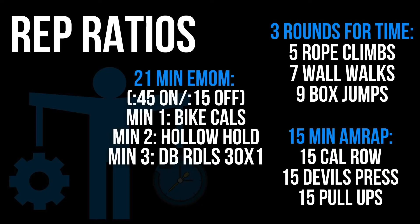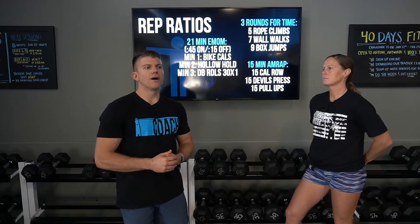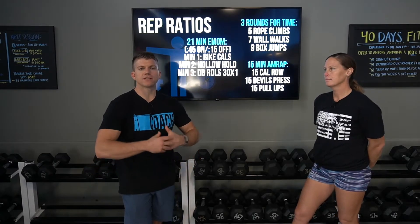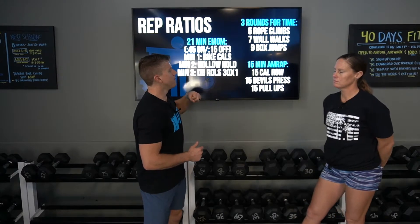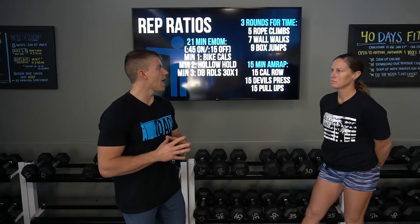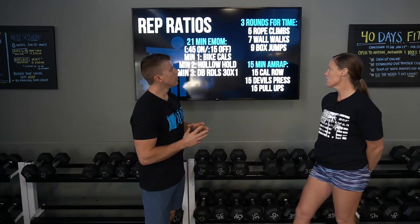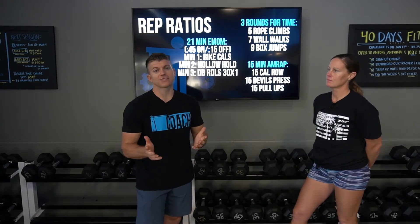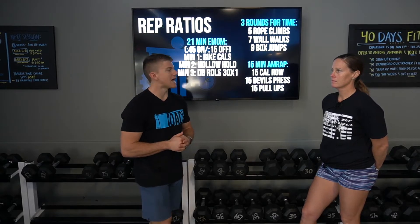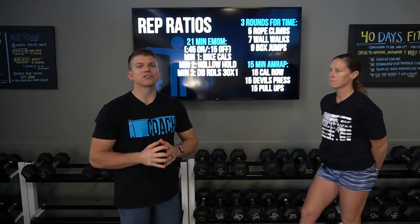Let's move down to this 15-minute AMRAP: 15-calorie row, 15 devil's press, and 15 pull-ups. One of the questions we can ask for all these workouts is: what is the limiting factor of this day — what is keeping this client from putting forth their best performance? In a 15-minute AMRAP, what is limiting them from the most rounds plus reps? Looking at this workout, it becomes pretty obvious that for 90% or more of our athletes, the devil's press is going to be far and above the limiting factor because of the time it will take. Fifteen cal row is well under a minute for most; 15 devil's press could take several minutes; and 15 pull-ups for most athletes is probably under a minute, especially in those first few rounds.